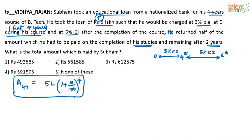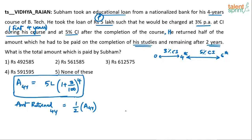This is the amount at the end of four years. He returned only half of it. This was the total amount to be paid at the end of four years — P into (1 + R/100)^T — and he returned only half. So amount returned after four years is half of the amount which was supposed to be paid at the end of four years. The remaining amount is the other half of whatever we calculated.